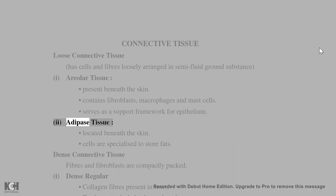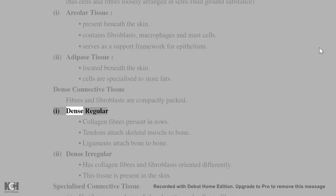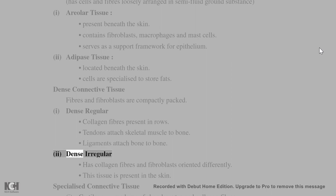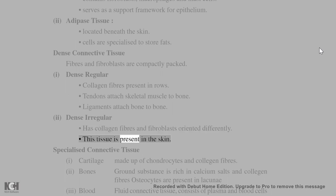Dense connective tissue has fibers and fibroblasts compactly packed. Dense regular connective tissue has collagen fibers present in rows; tendons attach skeletal muscle to bone and ligaments attach bone to bone. Dense irregular connective tissue has collagen fibers and fibroblasts oriented differently and is present in the skin.